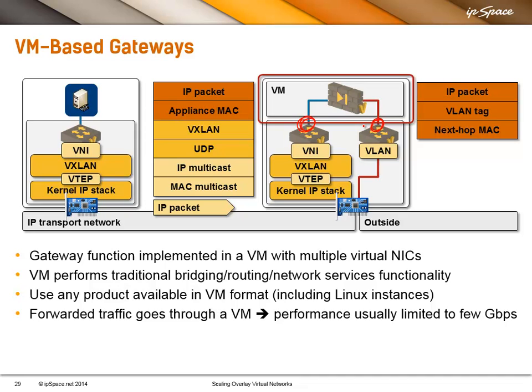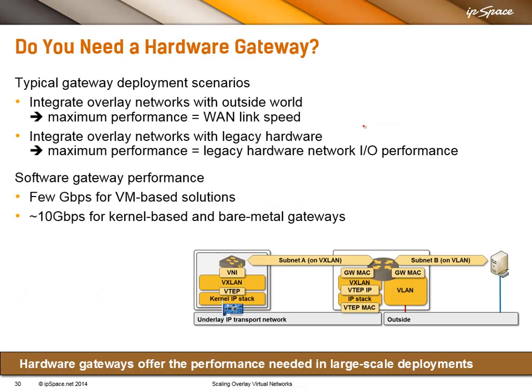Do keep in mind that if you send traffic through a VM, you usually won't get stellar performance. In most cases, if the vendor didn't do a good job, you would get 1, 2, maybe 3 gigabits per VM. If the vendor did a good job, you will get up to 10 gigabits per VM. So, do you need a hardware gateway or not? It depends on what the performance requirements are and what the integration requirements are.